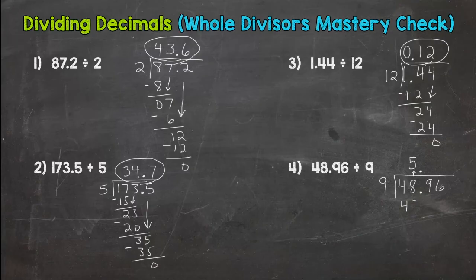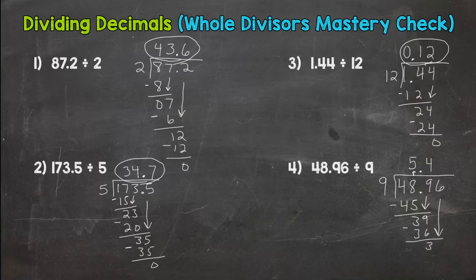Five times nine, 45. Subtract, I get three. Bring down that nine. So how many nines out of 39? That is four. Four times nine is 36. Subtract, I get three. Bring down that six. Well, we just did that fact there. Four groups of nine out of 36. Four times nine is 36. Subtract, we get zero. So five and 44 hundredths.